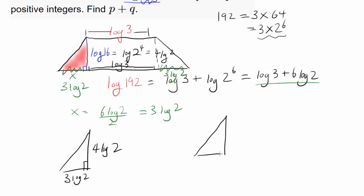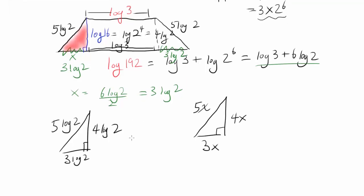Whenever you have a triangle with 3 times something and 4 times something, and it's a right triangle, the hypotenuse is 5 times something. So our hypotenuse is 5 log 2. We have everything we need to find the perimeter.